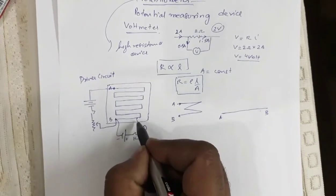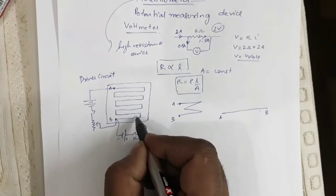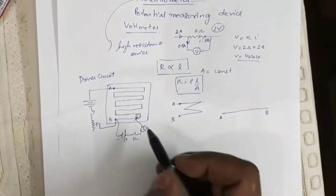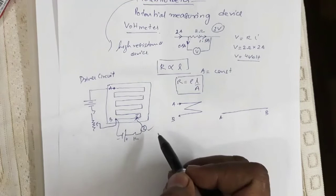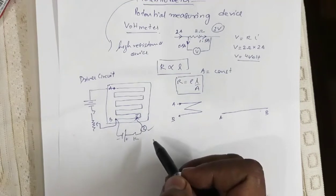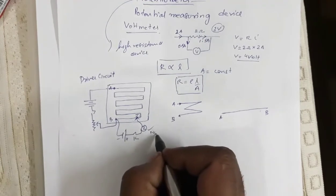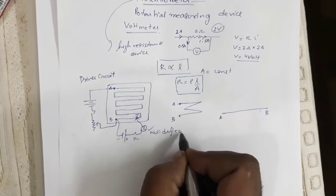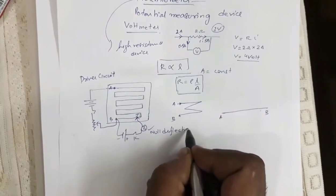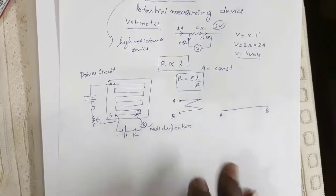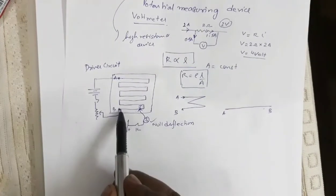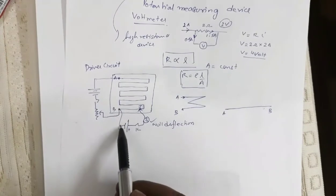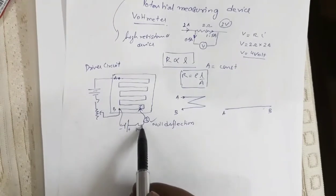Suppose at a particular position of the jockey, the galvanometer is showing null deflection. That means the potential drop across this segment of the wire is equal to the potential drop across the cell connected in that branch.